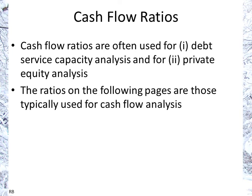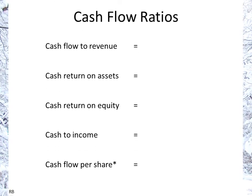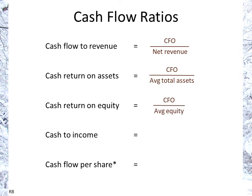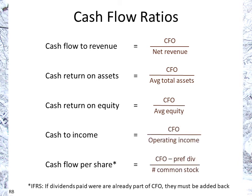Additional market value ratios include price to cash flow (price per share over cash flow per share), price to sales, price to book value (price per share over book value per share), and EBITDA per share — earnings before interest, tax, depreciation, and amortization divided by average shares outstanding. Cash flow ratios are also used, particularly for debt service capacity and private equity analysis. These include cash flow to revenue, cash return on assets, cash return on equity, cash to income, and cash flow per share. CFO stands for cash flow from operations.